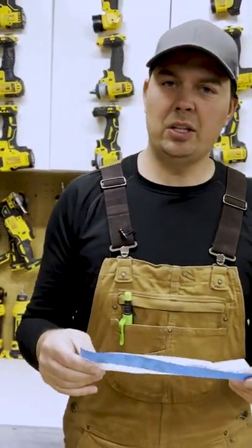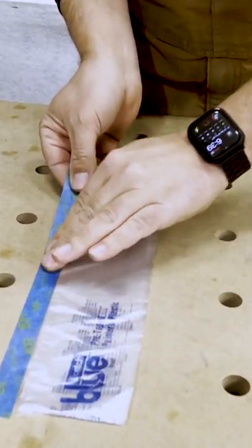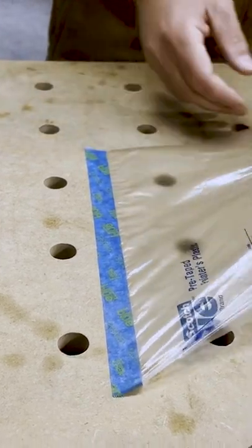You just tear it off just like you would with saran wrap or tinfoil, so you can just tape it right to your wall, to your trim work. Then you can just unfold your plastic.